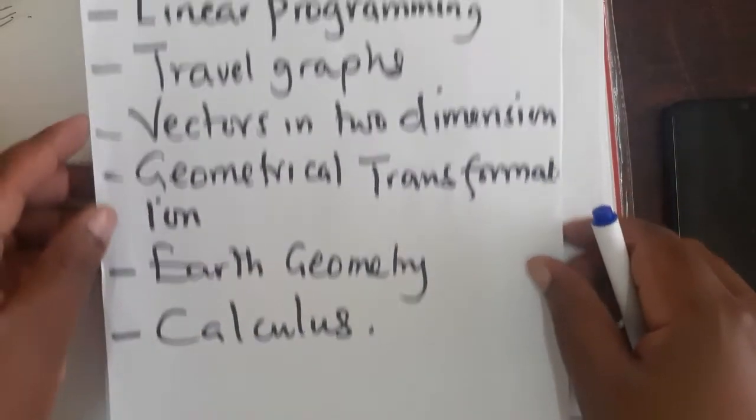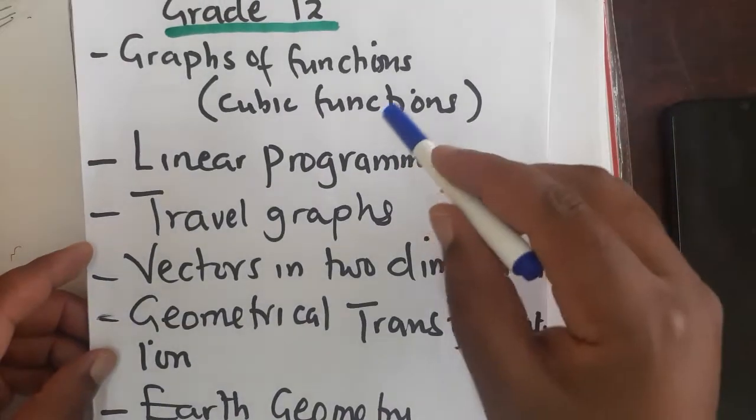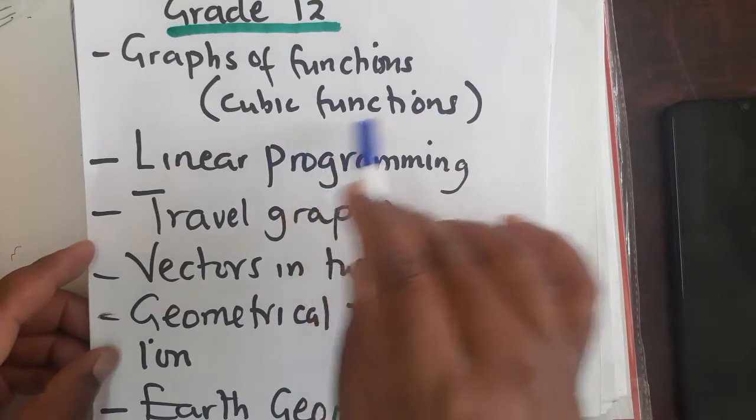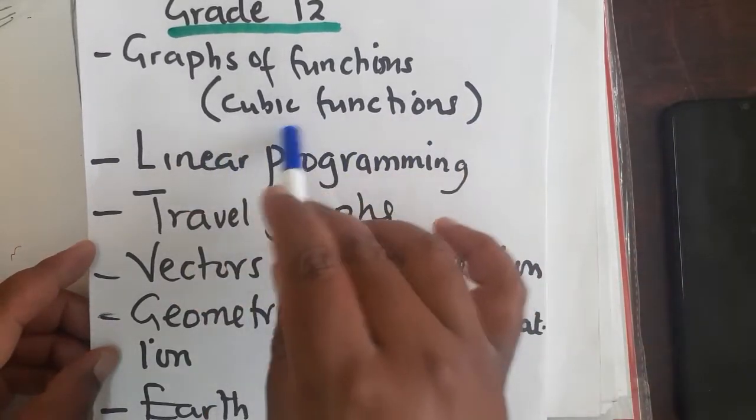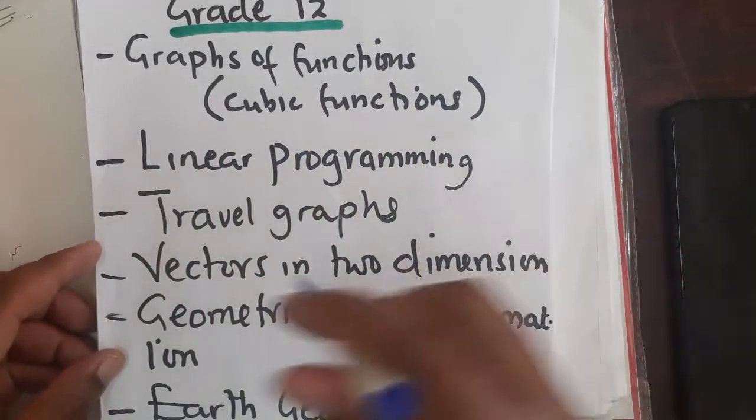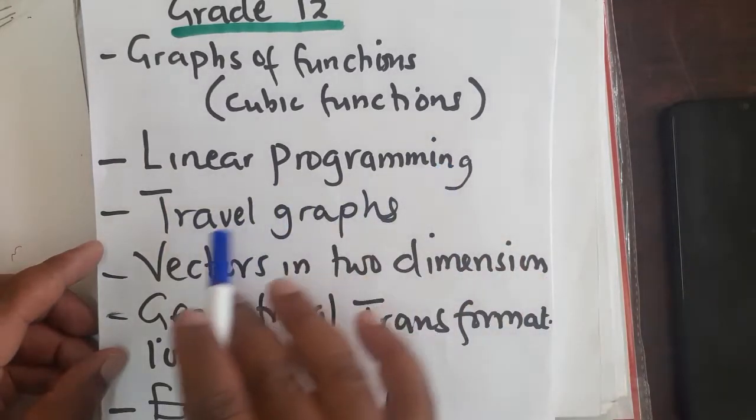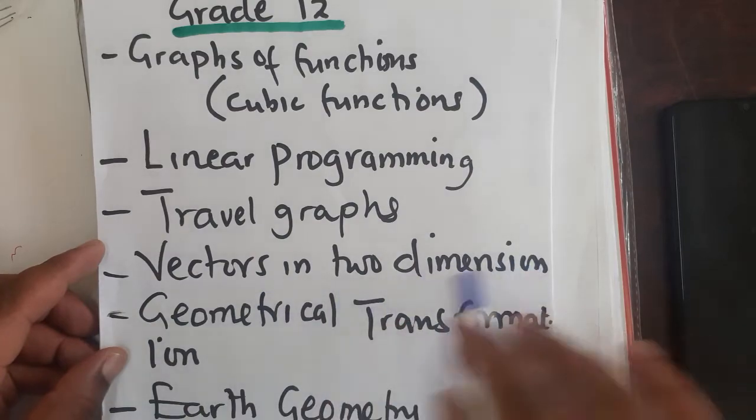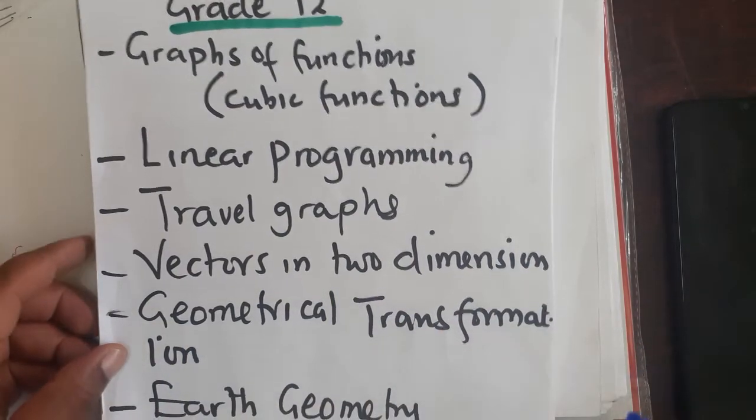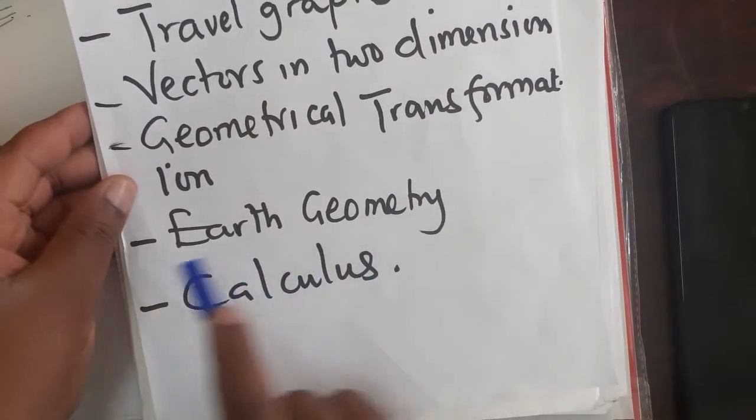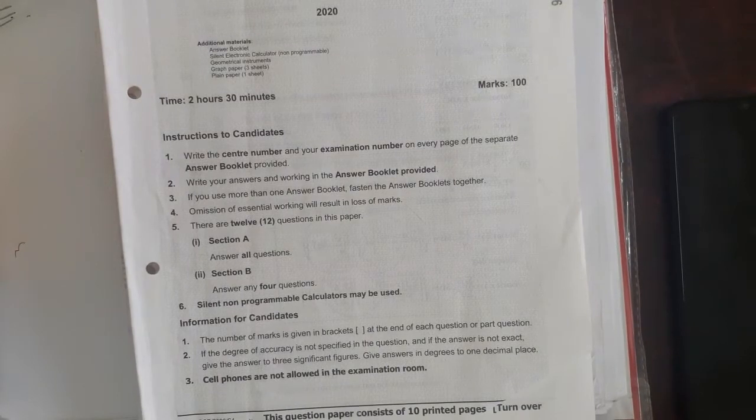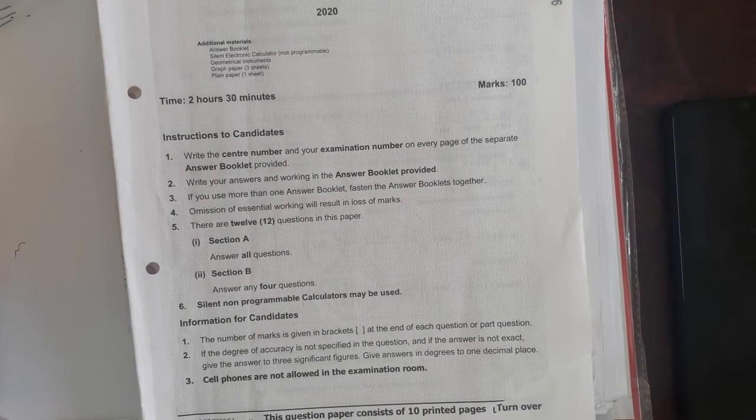Then we go to grade 12. We have graphs of functions, which we are calling cubic functions, especially I think in our videos, what we are showing is cubic functions. Then we go to linear programming, travel graphs, vectors in two dimensions, geometrical transformation, earth geometry and calculus. This is what you need to cover for you to be able to sit for these exams. Those topics should be covered conclusively.